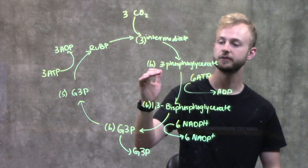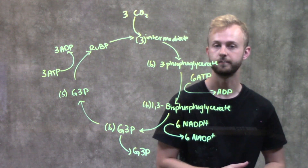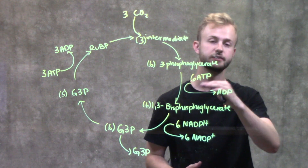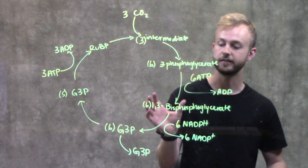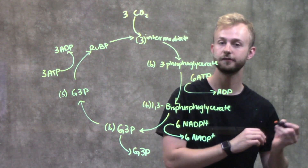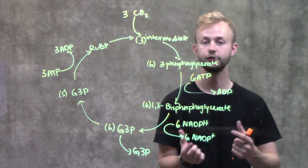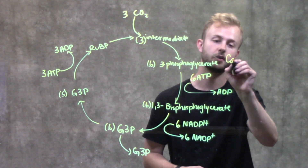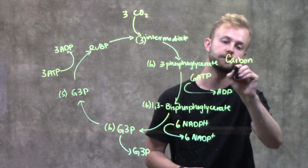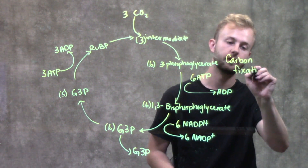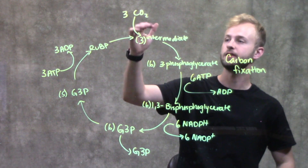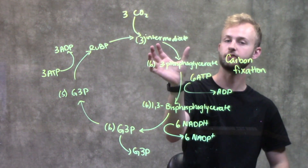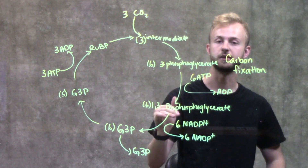So now we're going to have 6 molecules of 3-phosphoglycerate. The next step of this phase of the Calvin Cycle is going to be to use 6 ATP molecules to create 6 molecules of 1,3-bisphosphoglycerate, which means that it has 2 phosphate groups. This part of the Calvin Cycle is our carbon fixation phase, because we're fixing carbon in the form of carbon dioxide onto this 5-carbon sugar to make these different intermediates.